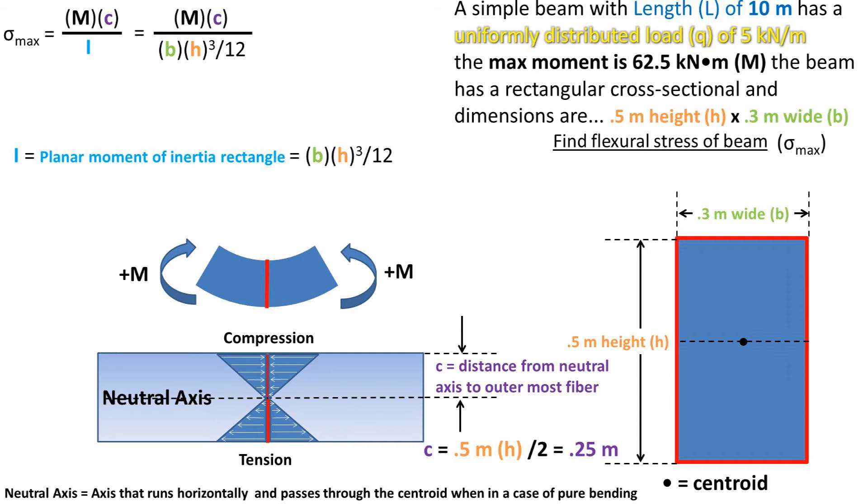You can use calculus to find the planar moment of inertia, or look up the value using Google or a table for the desired cross-sectional shape. Planar moment of inertia is the resistance for a certain shape to resist bending under a load.